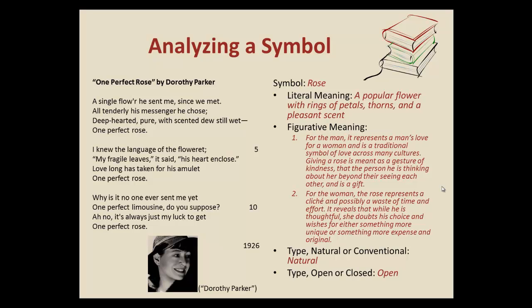Let's go ahead and analyze a symbol. This happens to be one of my favorite poems: 'One Perfect Rose' by Dorothy Parker. She has a great sense of humor. Let me just read the work aloud and then we'll talk about its meaning. 'A single flower he sent me since we met. All tenderly his messenger he chose. Deep-hearted, pure, with scented dew still wet. One perfect rose. I knew the language of the flouret. My fragile leaves, it says, his heart enclose. Love long has taken for its amulet. One perfect rose. Why is it no one ever sent me yet one perfect limousine, do you suppose? It's always just my luck to get one perfect rose.'